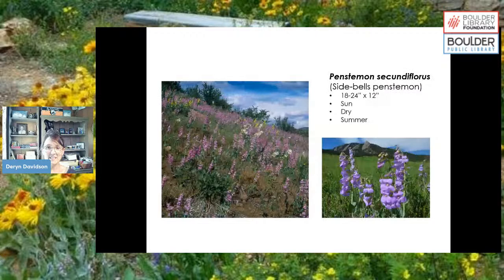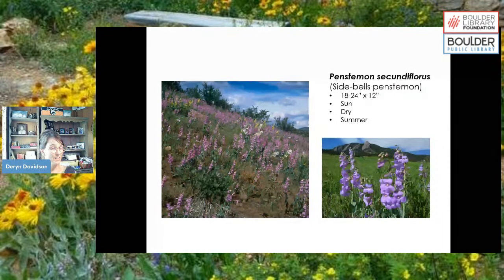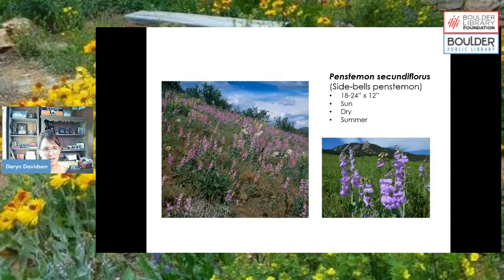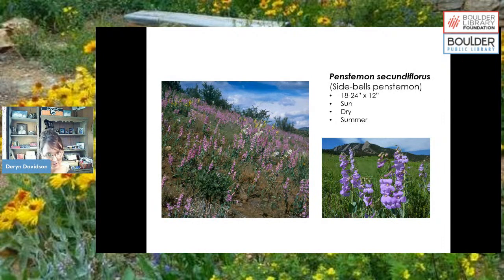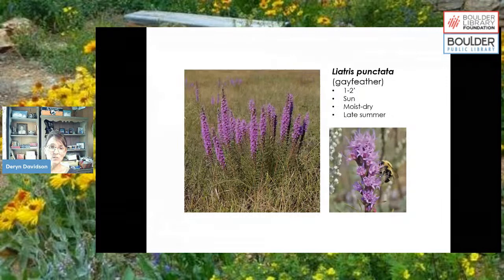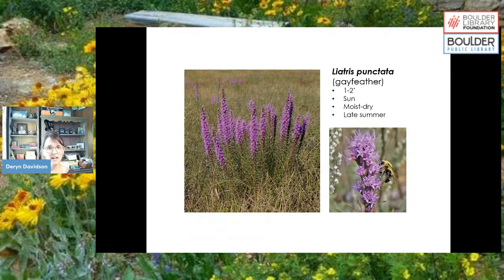Penstemon secundiflorus, sidebells penstemon, is beautiful and blooming right now on rocky slopes and hillsides. There are several native penstemons in Colorado that do well. Liatris punctata, or gayfeather, is another late bloomer — it gives a great pop of purple later in the season and is an excellent pollinator species.